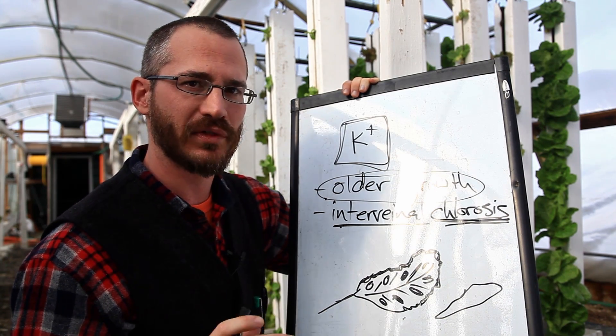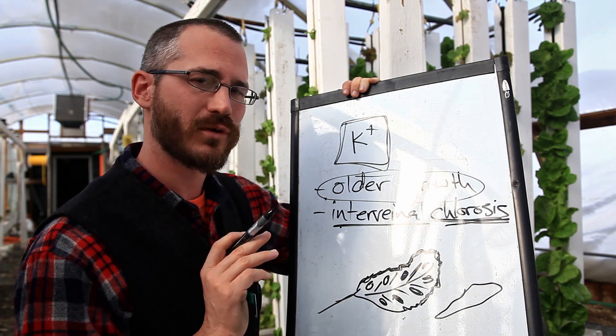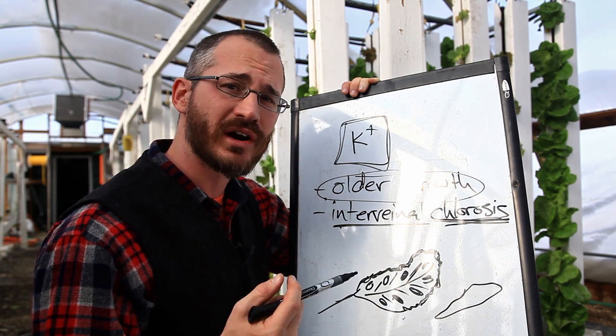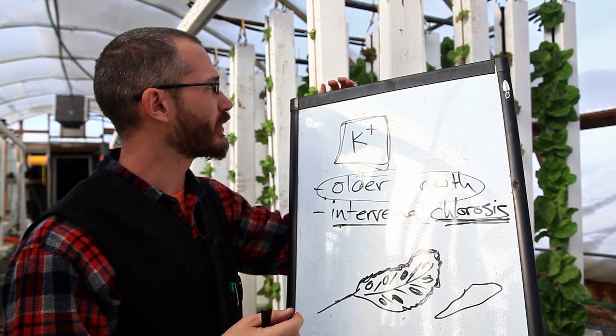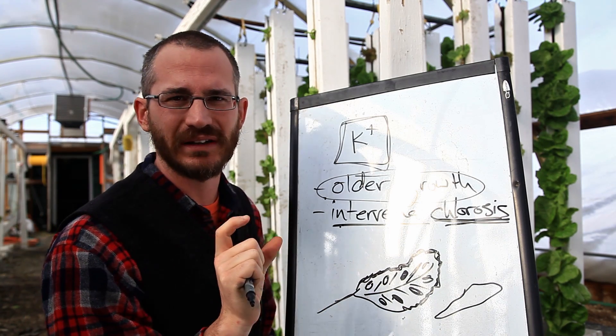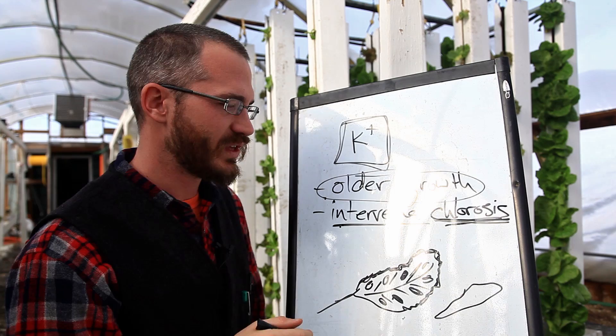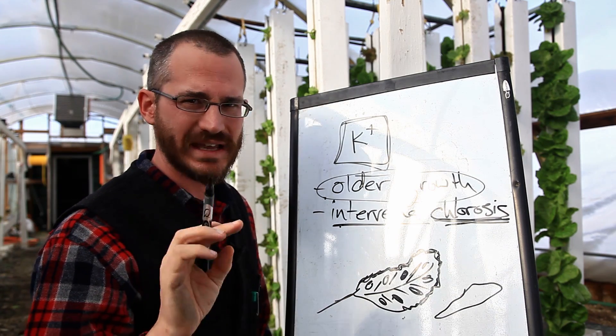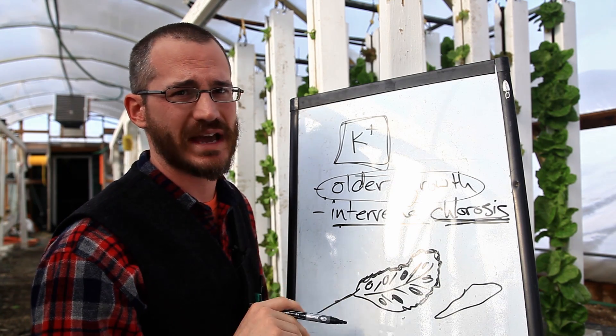Another thing that's kind of a telltale thing in my experience is really poor root growth. So if your roots aren't developing very well, if you can grab your seedling and just pull on it and it pulls out and it's got a spindly, tiny little root system, then oftentimes potassium is to blame.